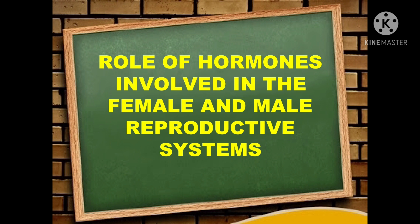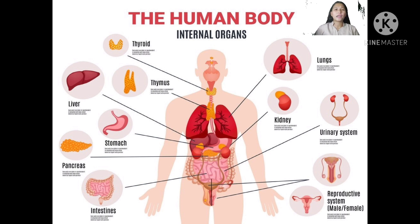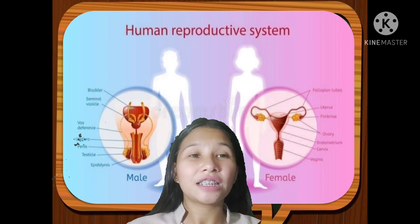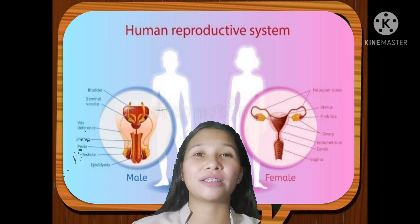The lesson for today is about the role of hormones involved in female and male reproductive systems. The human body is made up of different systems that coordinate with one another to perform their functions well. And if any part of this organ malfunctions, the body will become unbalanced. The system involved in sexual reproduction is called the reproductive system.